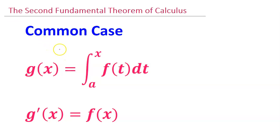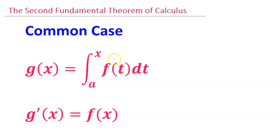Before we get started, let me mention the common case of the second fundamental theorem of calculus. It's all about taking the derivative of an integral defined function. For the common case, the lower limit of integration has to be a constant, and the upper limit is simply x. If that's the case and you want to take the derivative, it's just going to end up being f of x — the integral and the derivative cancel each other out, and you're left with the function. The placeholder variable gets replaced by the real variable x.